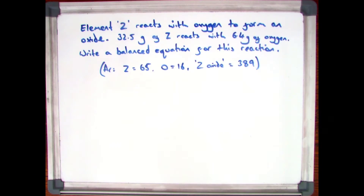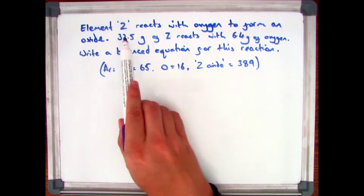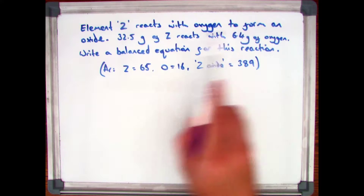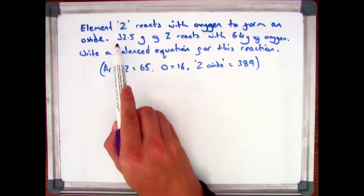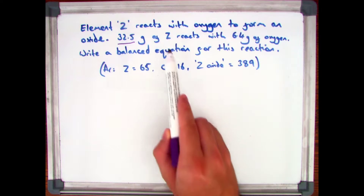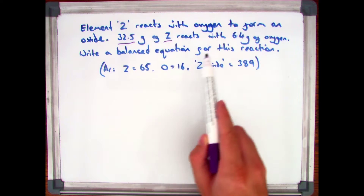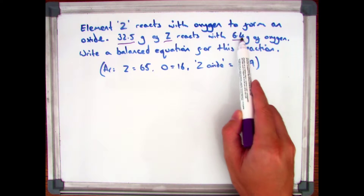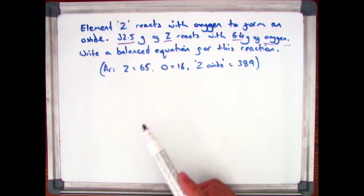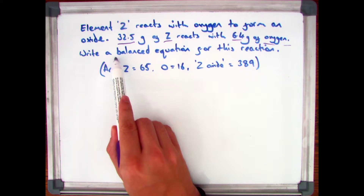So in an exam you might get a question like this. It says element Z reacts with oxygen to form an oxide. 32.5 grams of Z reacts with 6.4 grams of oxygen. Write a balanced equation for this reaction.